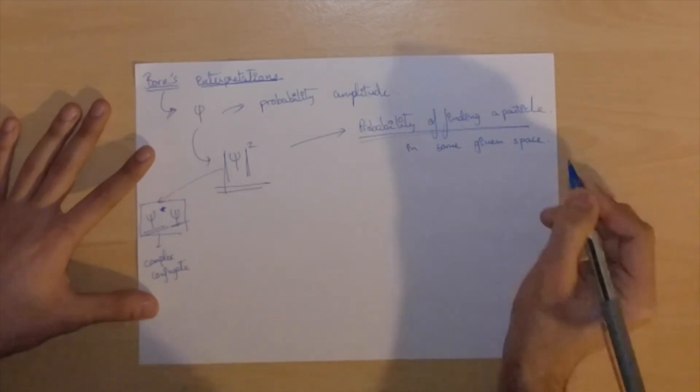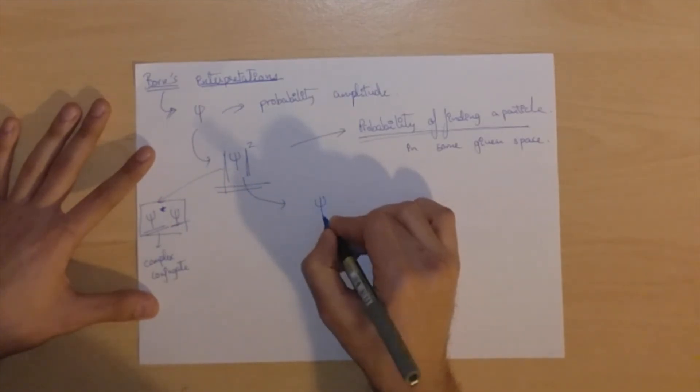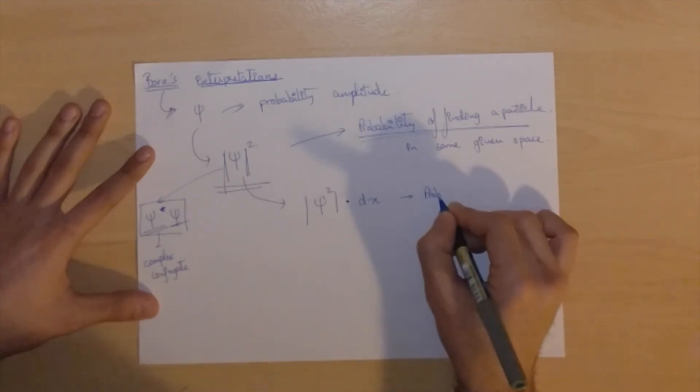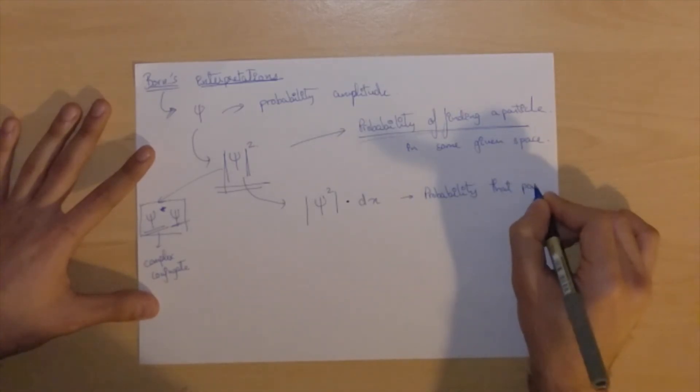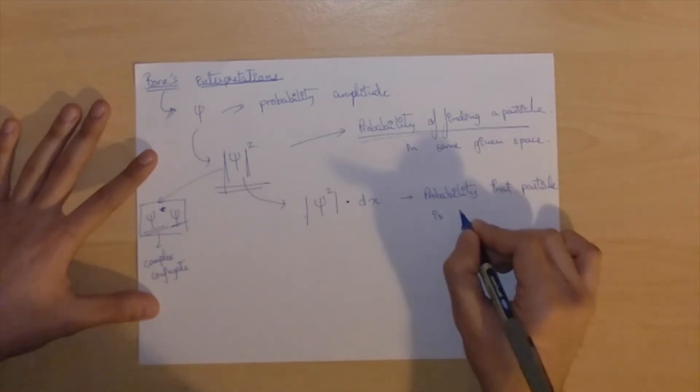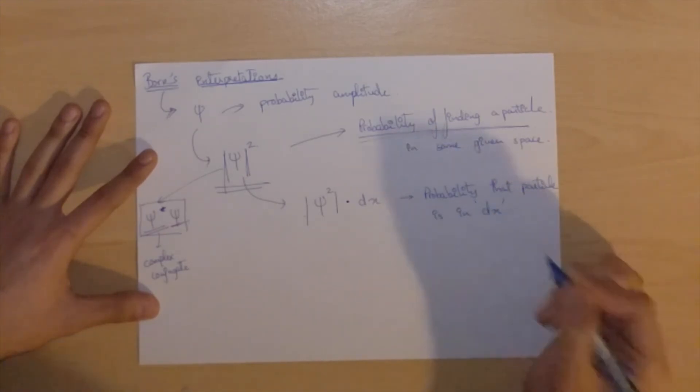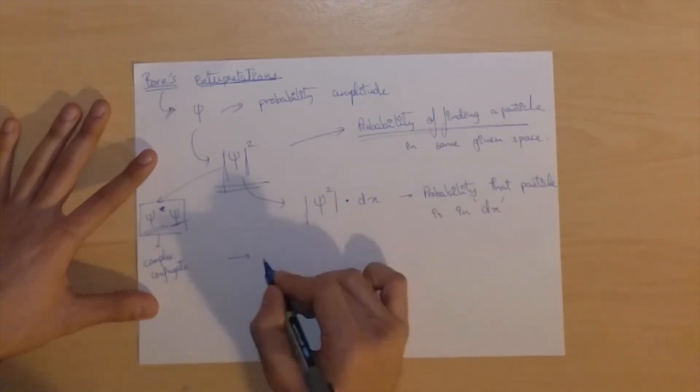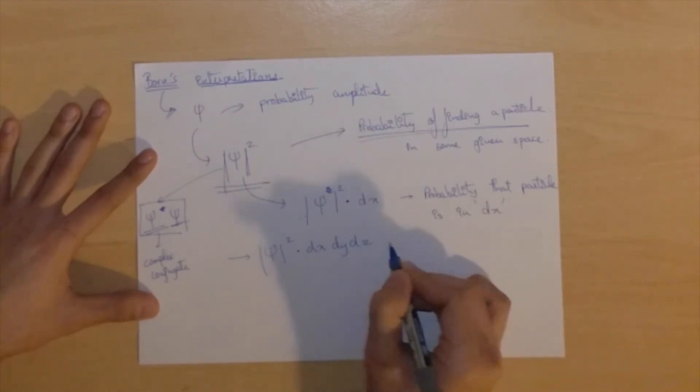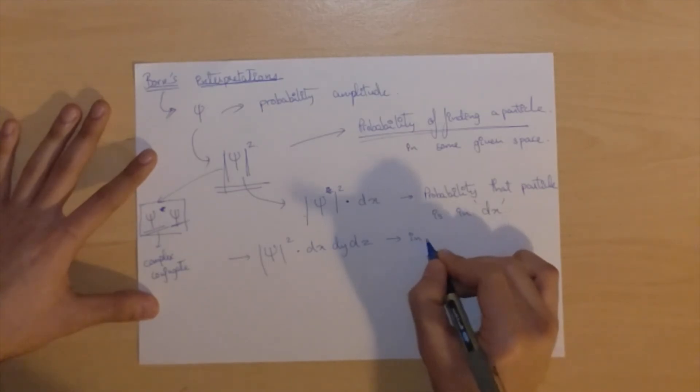So psi squared represents the probability of finding a particle in some given space. And of course you will have to define the space you are in, so if you're looking at space in one dimension, psi squared times dx will give you the probability that you will find the particle that this psi is describing in that length dx. So the same thing can be extended to three dimensions. So psi squared times dx dy dz, which gives you the probability of finding a particle in a given volume.